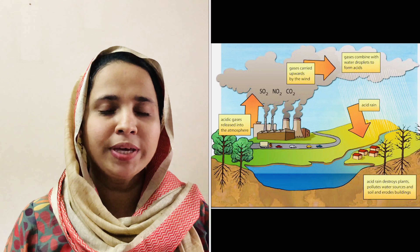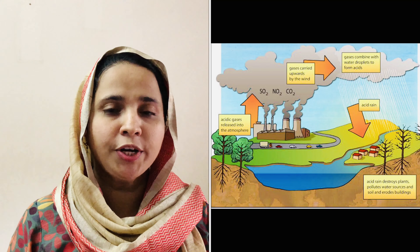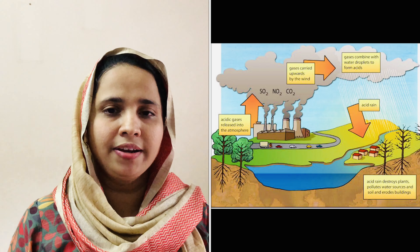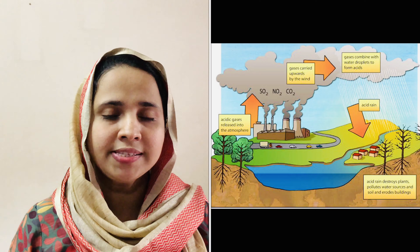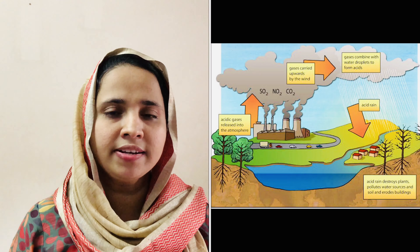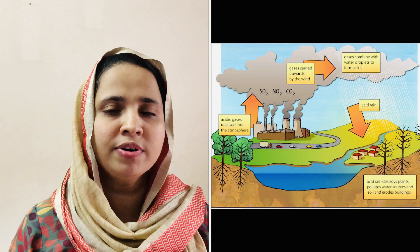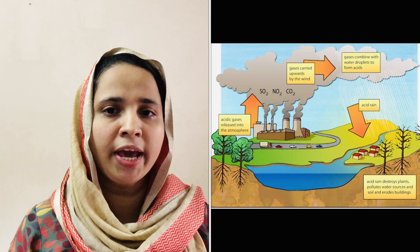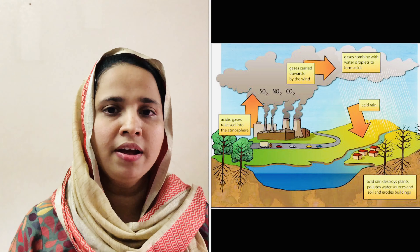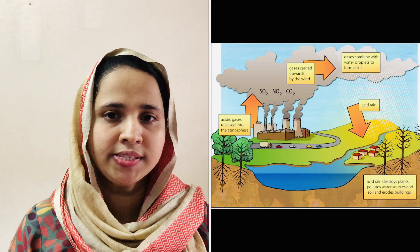Hello everyone, welcome back to Chemates. Today we are discussing the topic of acid rain. Acids, mainly nitric acid and sulfuric acid, are formed in the atmosphere from the air pollutants nitrogen oxides and sulfur oxides.